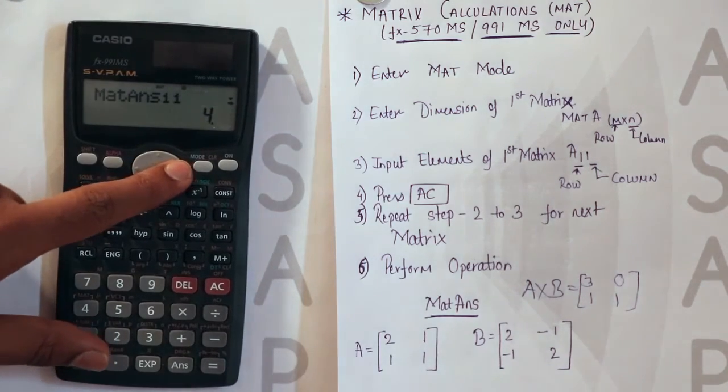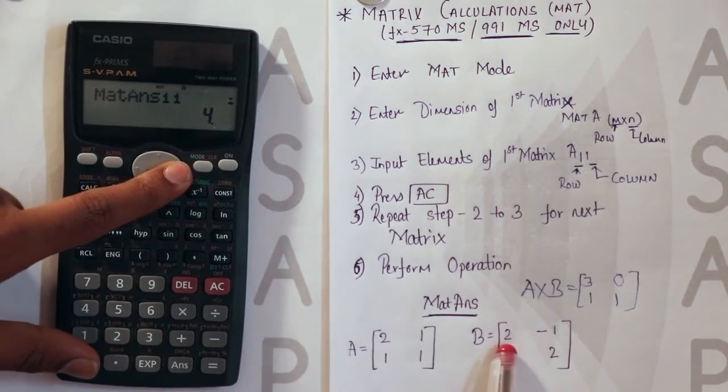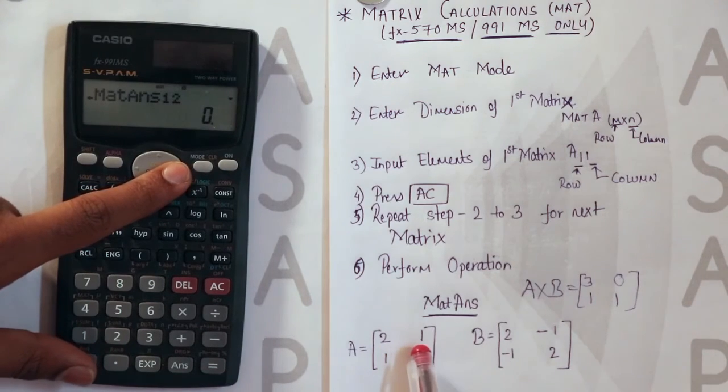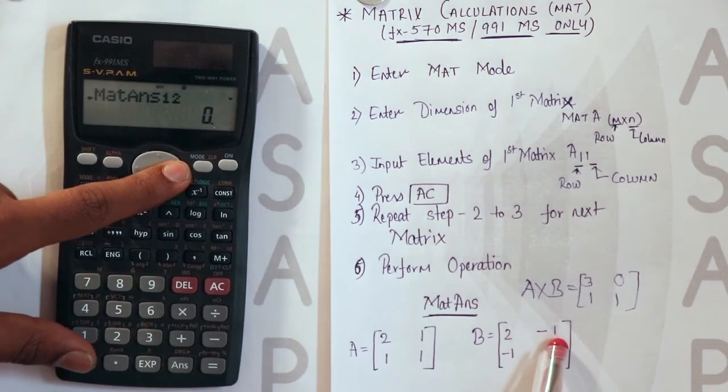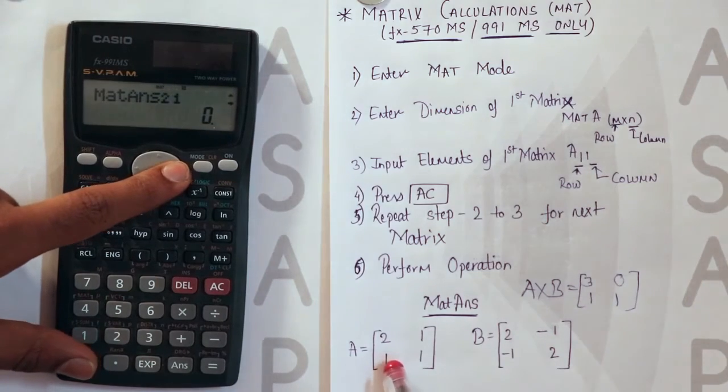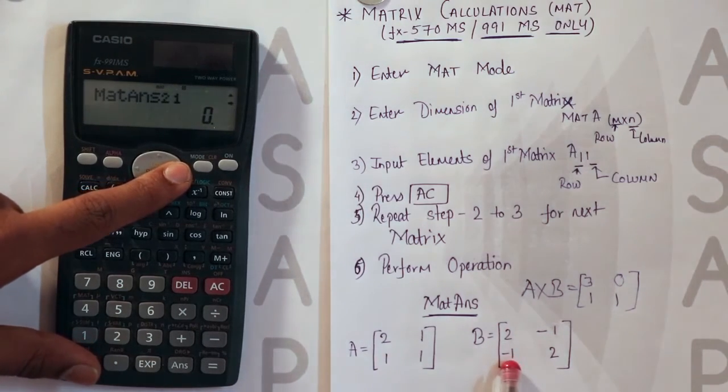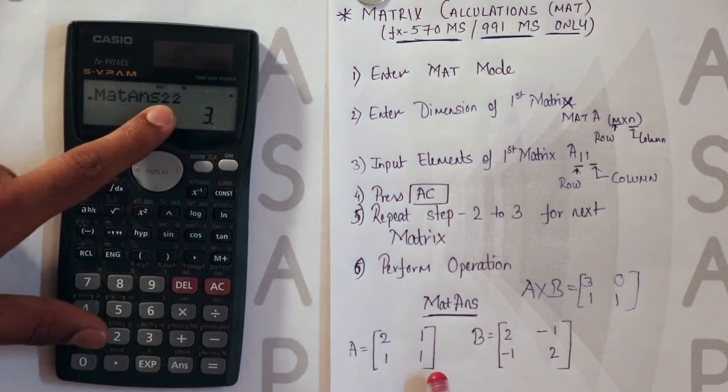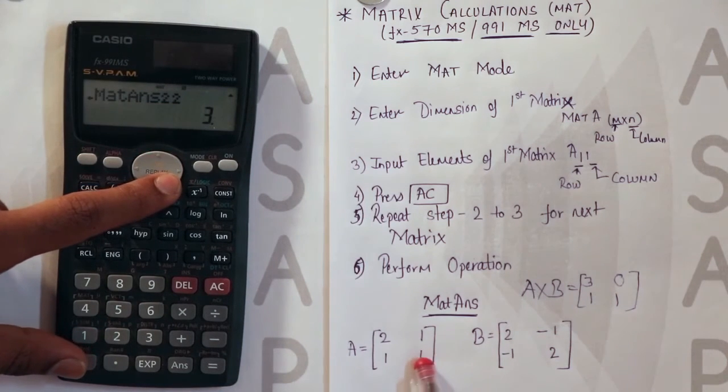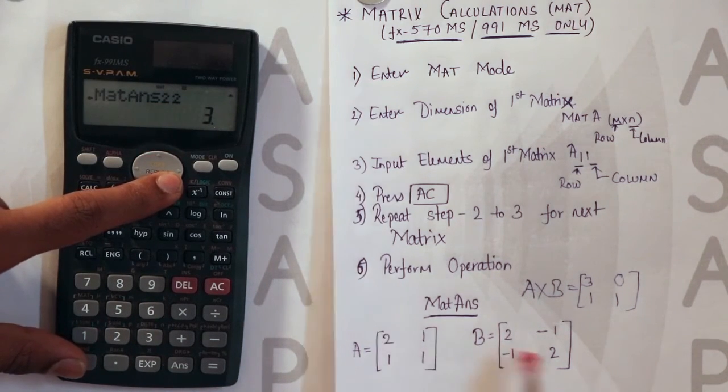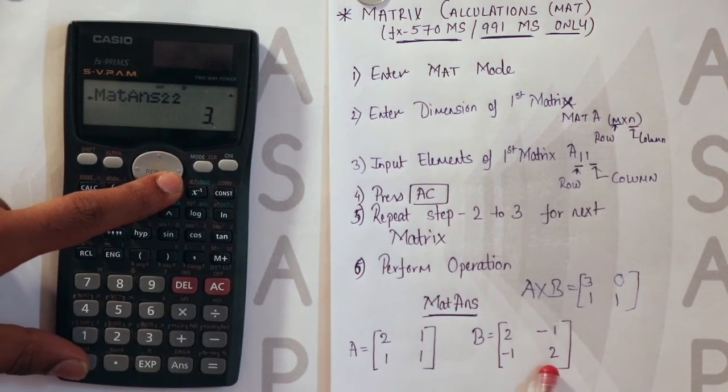That is 4. You can see here. 2 plus 2. 4. 1 plus minus 1 that is 0. Then 1 plus minus 1 that is 0. And matrix 2 2 that is. Second row second column of A. And second row second column of B. You will get 3.